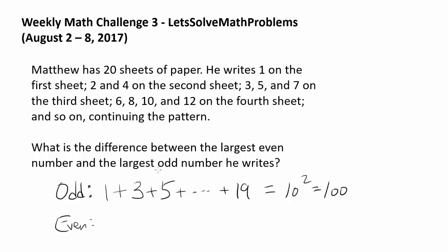Now let's think about even. For even, how many even numbers do we have? We have two on the second paper, four on the fourth paper and so on until we have 20 on the last paper. And this thing is equal to 2 times 1 plus 2 plus 3 plus all the way to 10, and that's 55.